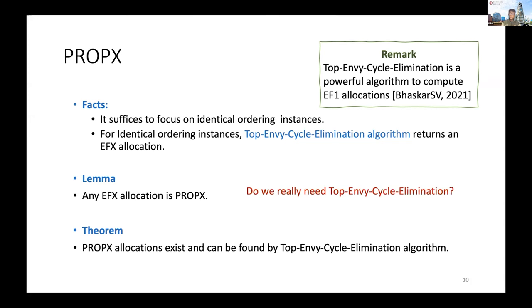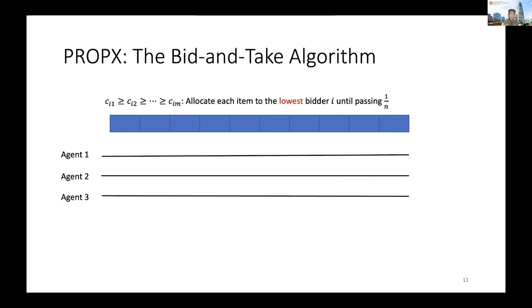But we want simpler algorithms. We answer this positively and propose the Bid-and-Take algorithm, a generalization of the moving knife algorithm. Items are ordered from highest cost to lowest cost. For each item, we allocate it to the agent who has the smallest cost on that single item. We continue: the second item goes to the agent with the smallest cost on that item, and so on. Once an agent's cost exceeds 1/n (in the unweighted setting), we stop assigning more items to her — she takes her bundle — and we continue with the remaining items and remaining agents.